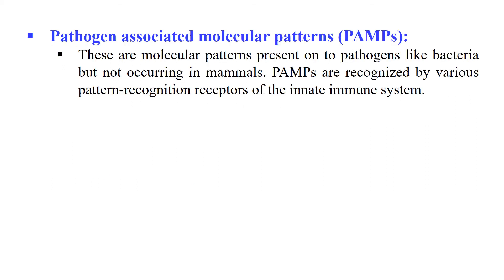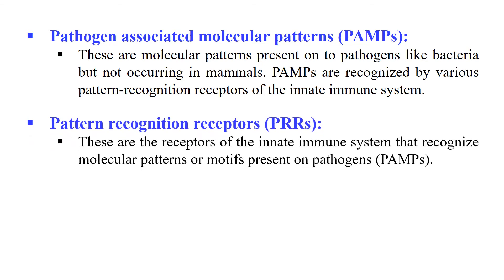Next, Pathogen-Associated Molecular Patterns, or PAMPs. These are molecular patterns present on pathogens like bacteria and viruses. These PAMPs are recognized by specific receptors on immune cells known as Pattern Recognition Receptors, or PRRs. So bacteria and other pathogens have certain patterns — PAMPs — which are recognized by PRRs of immune cells.